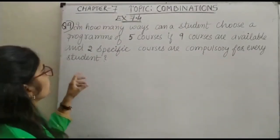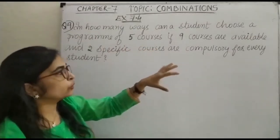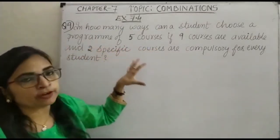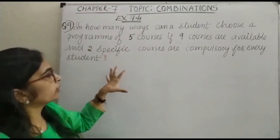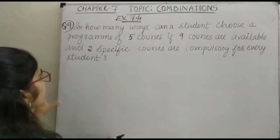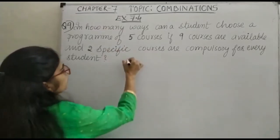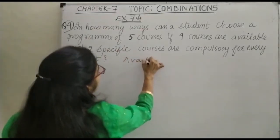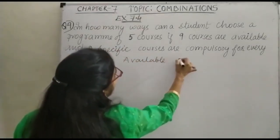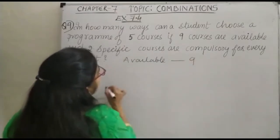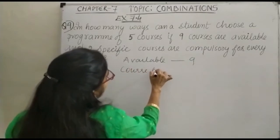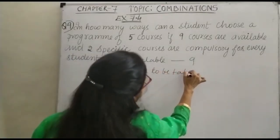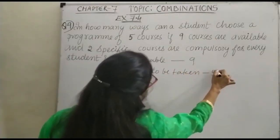In your question number 9 it is said: In how many ways can a student choose a program of 5 courses? Look at the program. What are you going to do? 5 courses. If 9 courses are available. How many available courses? We are here with available courses 9. And course to be taken is 5, right?